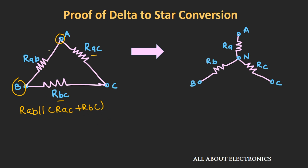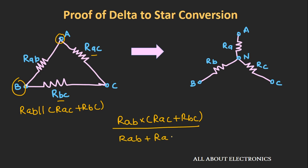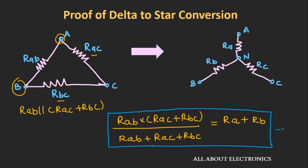Or we can write the equivalent resistance between node A and B as RAB multiplied by (RAC plus RBC) divided by the summation of all the resistors, that is RAB plus RAC plus RBC. Now in the equivalent Y network, the resistance between node A and B can be given as the summation of resistors RA plus RB, since node C is open circuited so no current will flow through that branch. So the equivalent resistance between node A and B will be RA plus RB. Let's call this equation number 1.